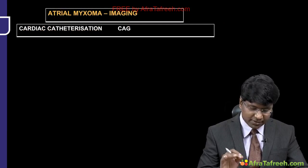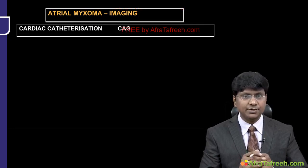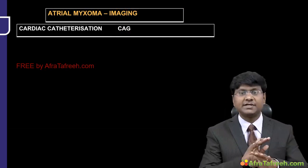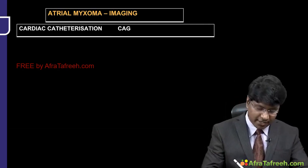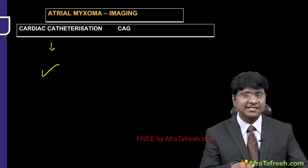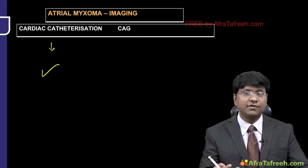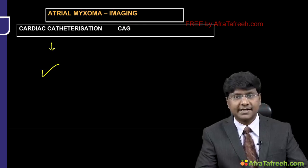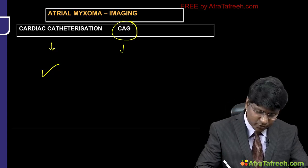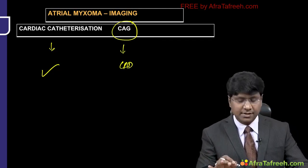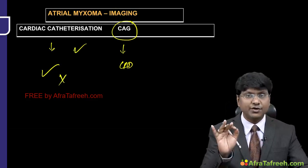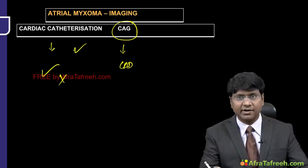Cardiac catheterization and coronary angiography were used previously but are no longer routinely used. They are reserved for when non-invasive imaging is not giving a clear picture. Cardiac catheterization should be avoided because of the risk of tumor embolization. Coronary angiogram is done only when associated coronary artery disease is suspected.